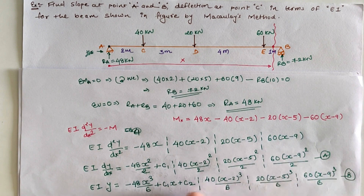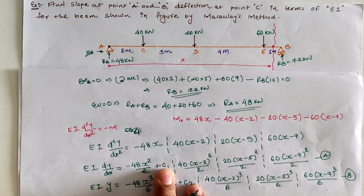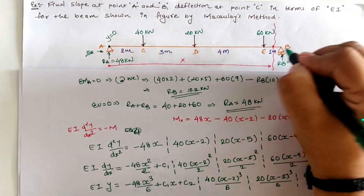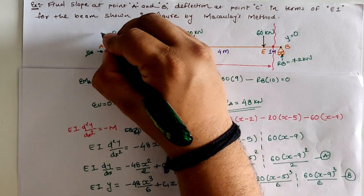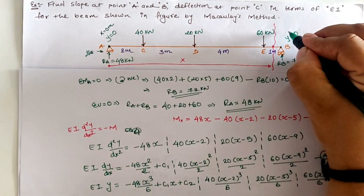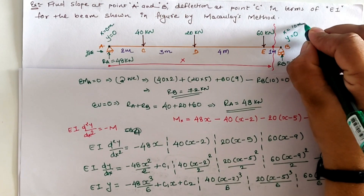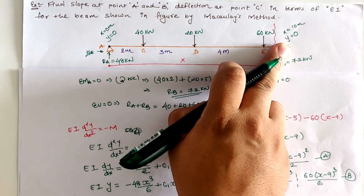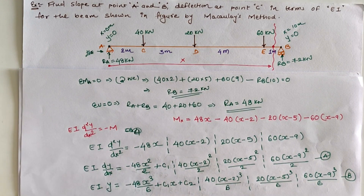To find the integration constants, we apply boundary conditions. We know that at a hinge support the deflection is zero, and at a roller support the deflection is also zero. At location A the distance is 0 meters, and at location B the distance from origin is 10 meters. So our two boundary conditions are: when x = 0, y = 0, and when x = 10 m, y = 0.